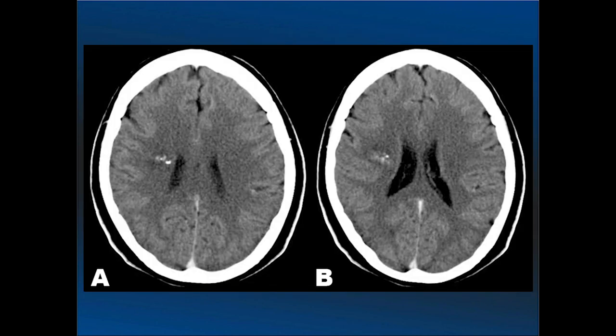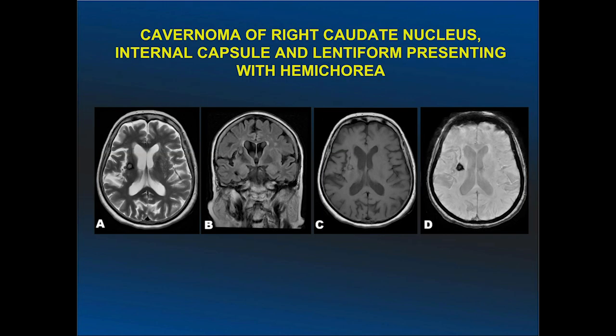We will now show some cavernomas from our cases. This is a right corona radiata popcorn-type cavernoma with calcifications on CT scan. This next case shows a right caudate nucleus cavernoma — this patient presented with hemichorea.